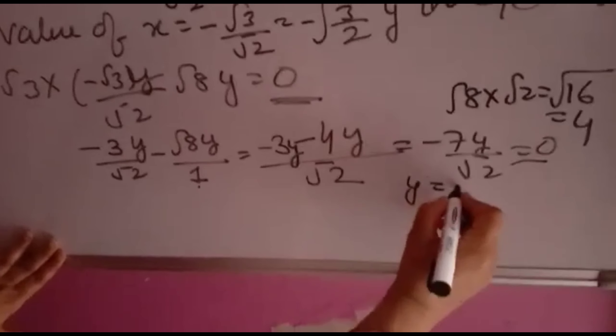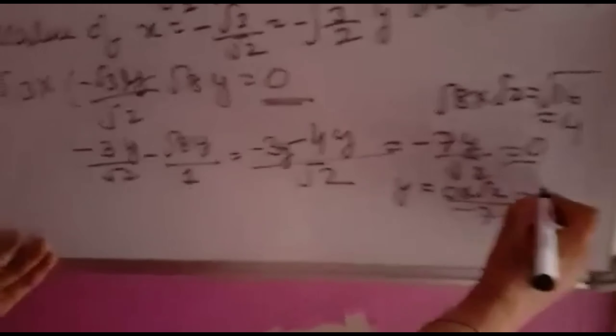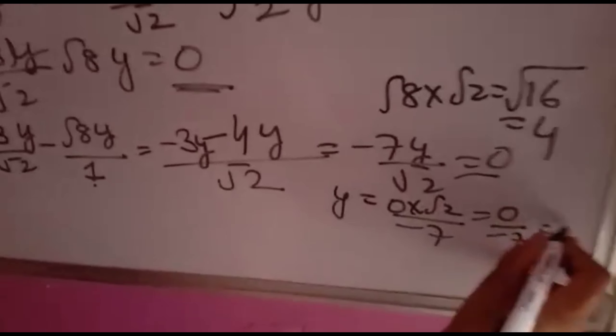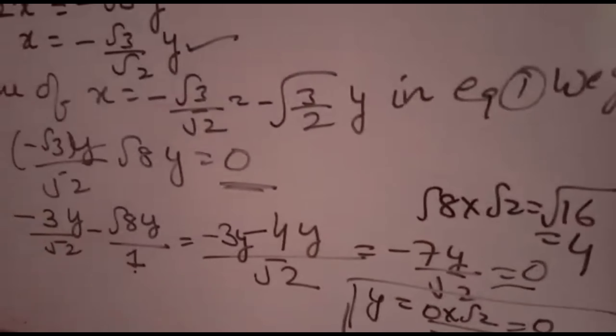Therefore, y equals 0·√2/(-7), which equals 0. The value of y is 0. This value you will substitute back into one of the equations.